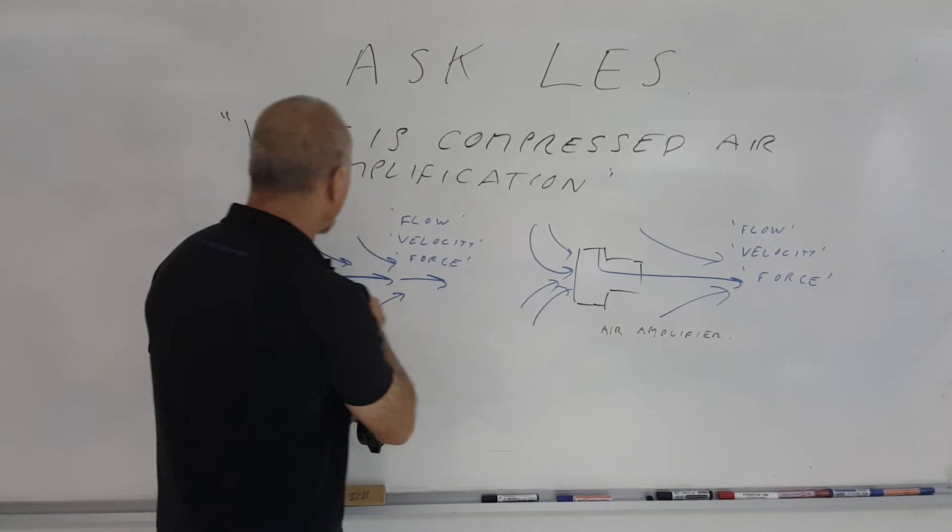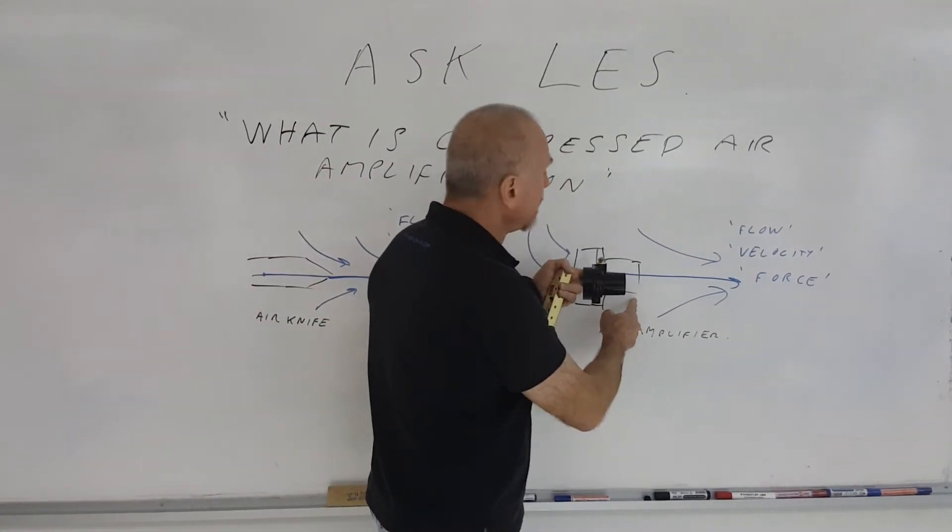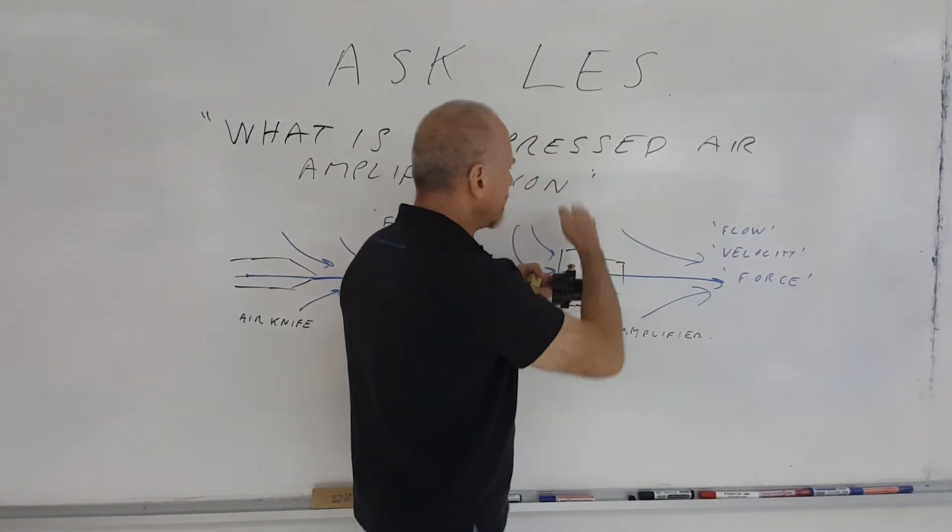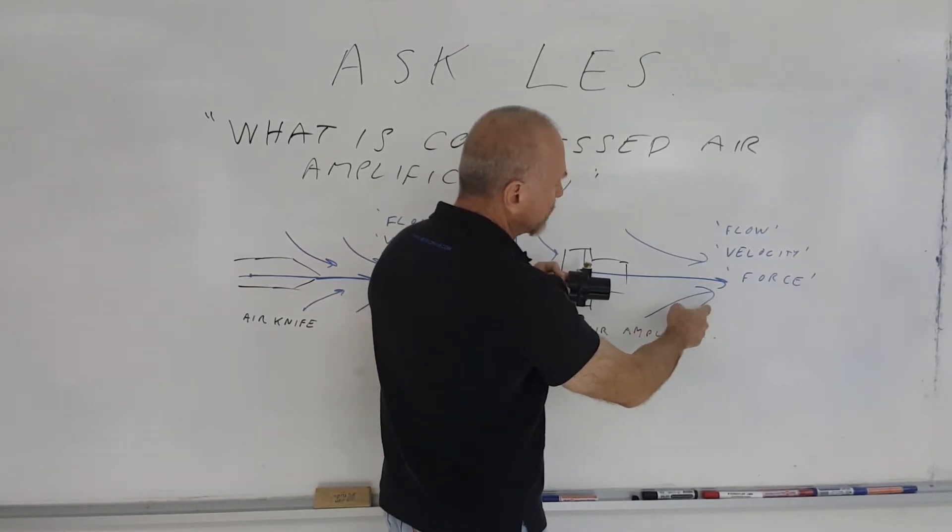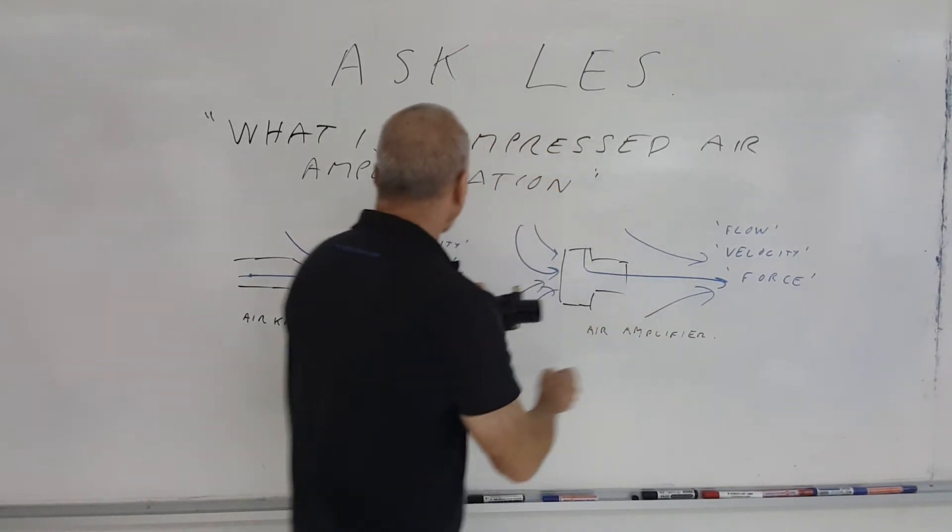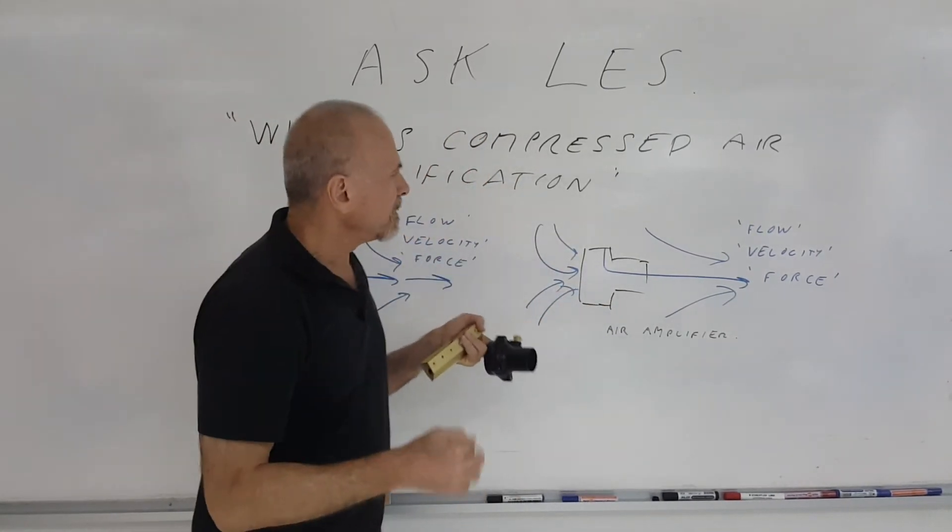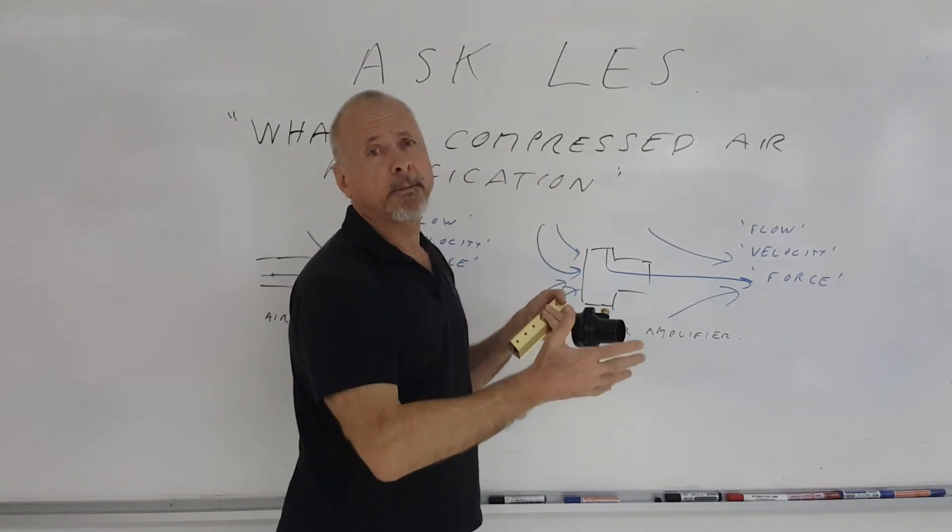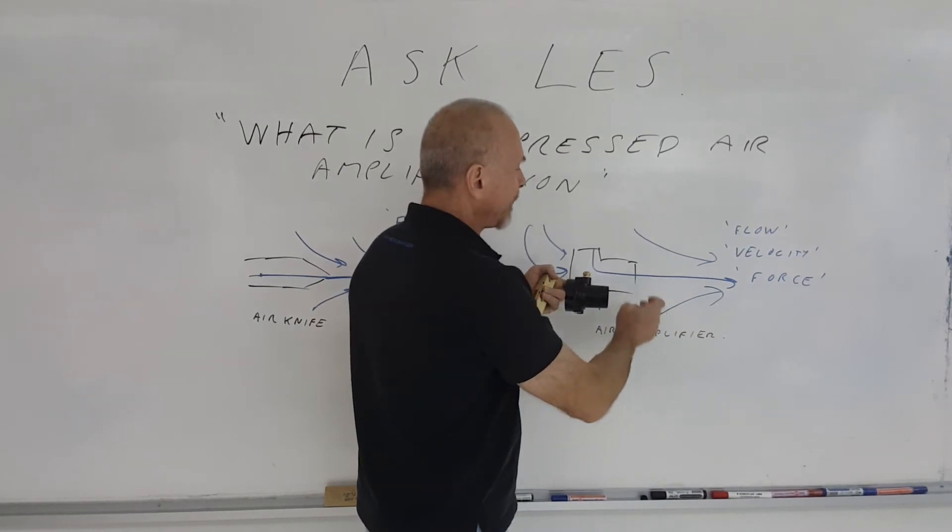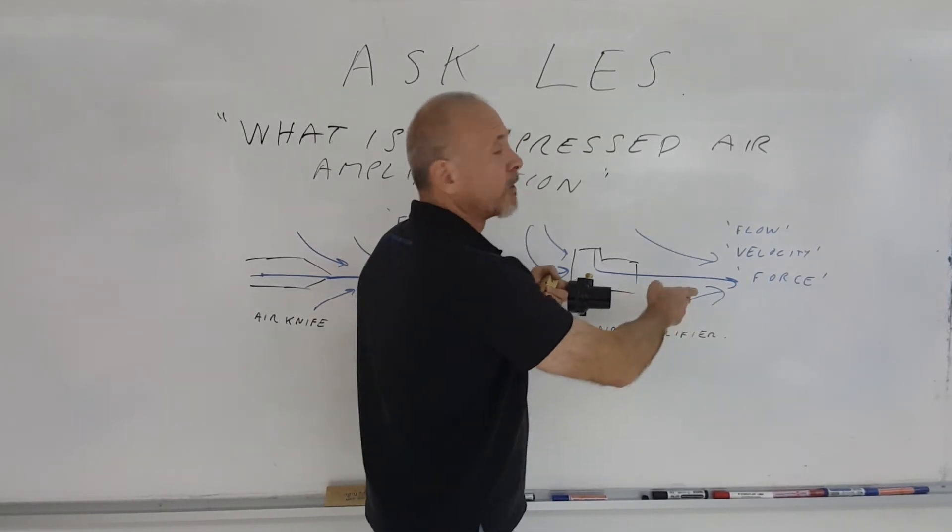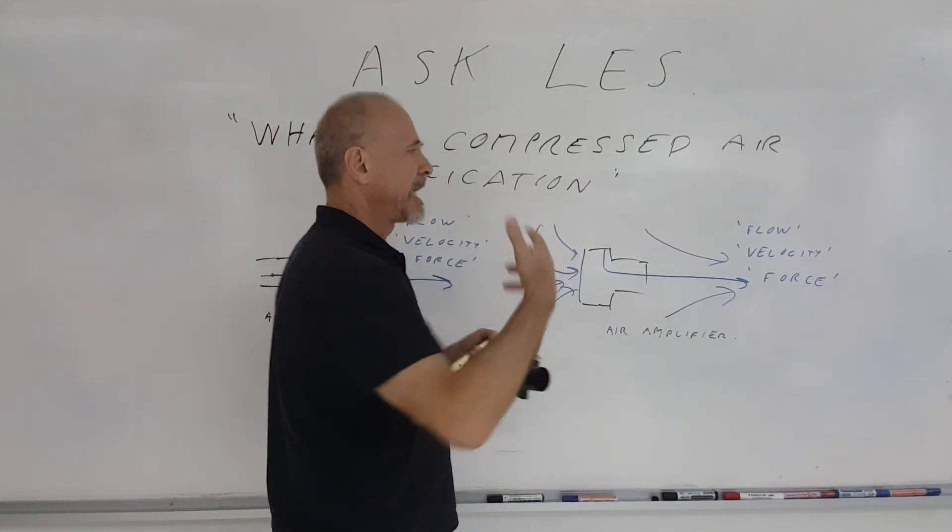So for an amplifier, for example, at the exit it may be 15, which means you're getting 15 times what the input compressed air is for flow. But when you go about 6 inches downstream from the exit of an amplifier or from an air knife, you're going to entrain more, and that entrainment on the average is another 3 times. So 6 inches downstream from the amplifier, the amplification ratio is no longer 15, it's 45.